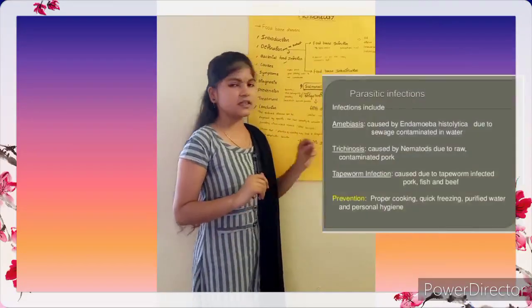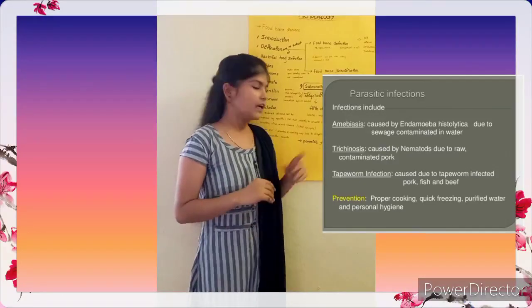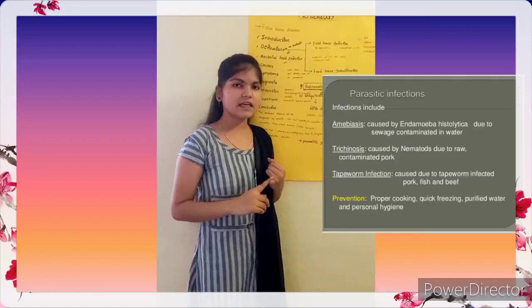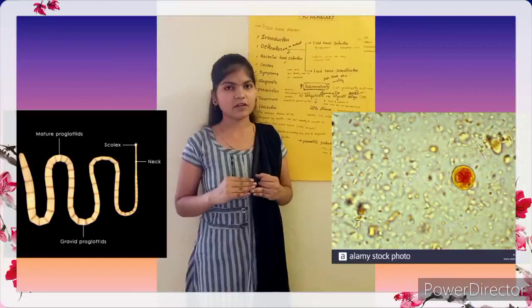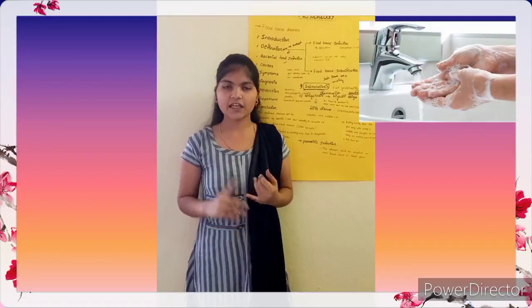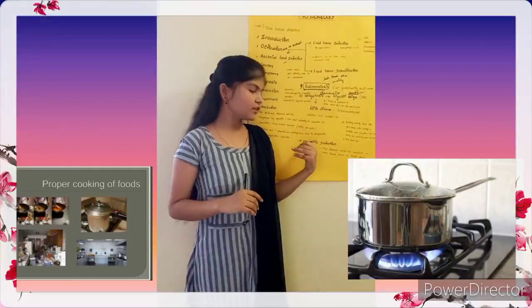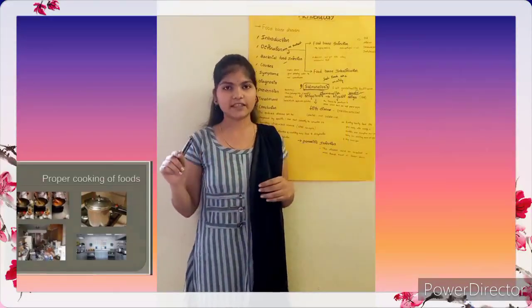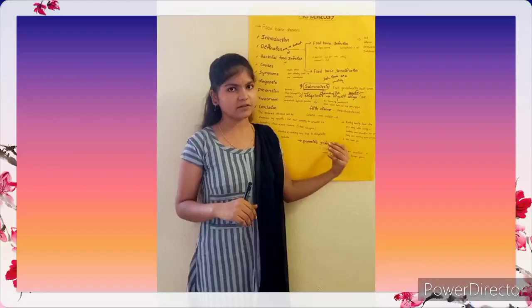Just now we finished bacterial food infection. Next is parasitic food infection, which includes amoebiasis and tapeworm infection. To prevent amoebiasis and tapeworm infection, we should take some measures: maintain personal hygiene, reheat food at high temperature, keep cooked food in refrigerators, and consume food cooked at high temperatures.